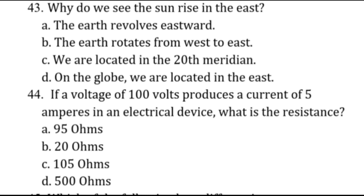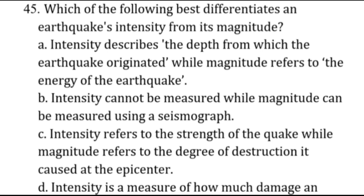If a voltage of 100 volts produces a current of 5 amperes in an electrical device, what is the resistance? The formula for resistance is R = V/I, so that is 100 volts divided by 5 amperes, which equals 20 ohms. The answer is letter B.